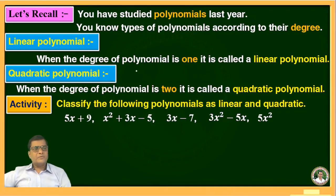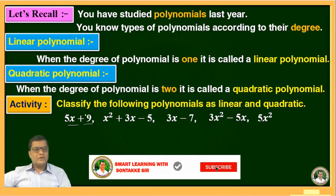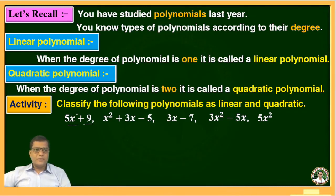The Linear Polynomial is the polynomial with degree 1. If we observe here, the degree of the first polynomial is 1 because the index of the variable is 1. In the second polynomial, the index of the variable is 2, meaning the degree is 2. Therefore, it is a Quadratic Polynomial.